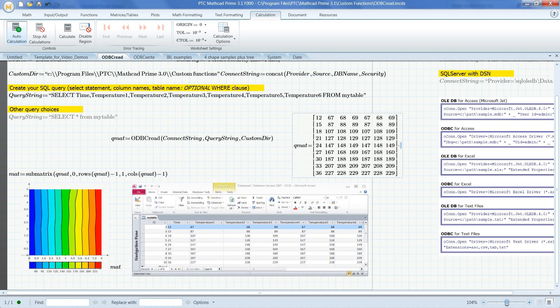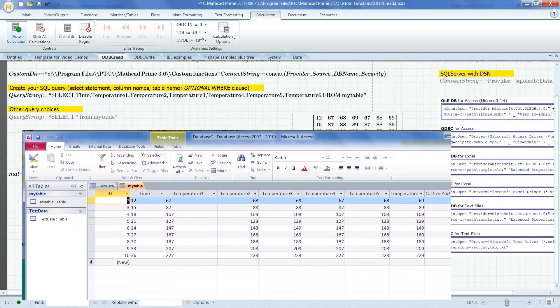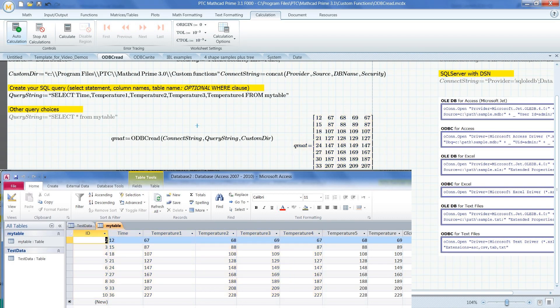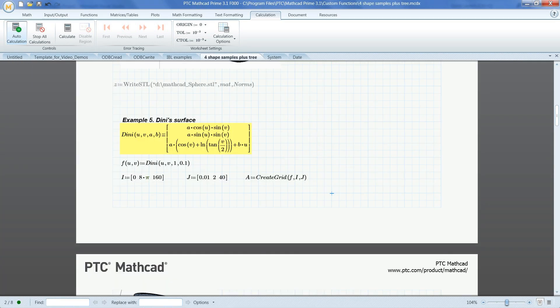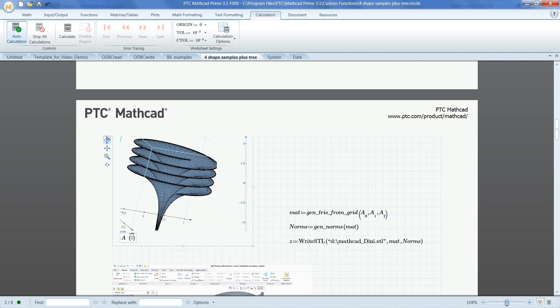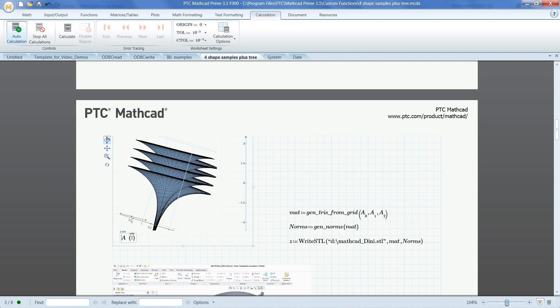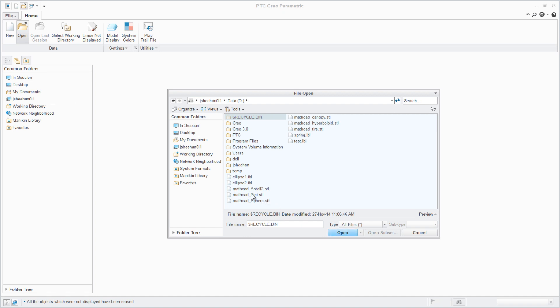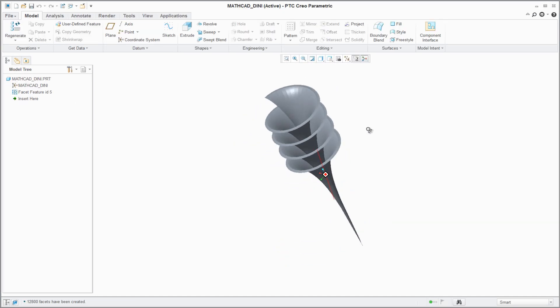Additionally, PTC MathCAD Prime 3.1 provides integrations with a variety of third-party tools, such as ProD's physical properties, CoolProp's fluid properties, and ODBC-compliant databases. With this release, users can also read and write HDF5 file format or export their mathematical algorithms to drive CAD surfaces through STL, DXF, or IBL formats.